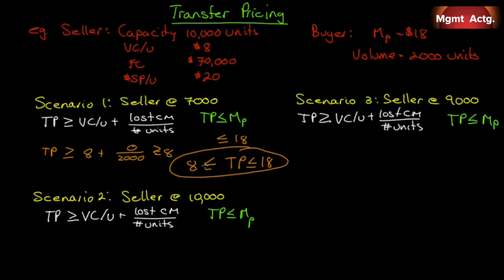It doesn't have to stop at $9. The seller could sell it for $17 — the buyer still saves $2,000 and has higher operating income, while the seller gets the difference between $17 and $8, which is $9 times 2,000 units — an extra $18,000. Typically when there's a range like this and it's in both parties' best interest, they'll find the midpoint. The midpoint here is $13, so chances are the transfer price would be set at $13. When there's idle capacity, negotiating is easy because it's a win-win for everybody.